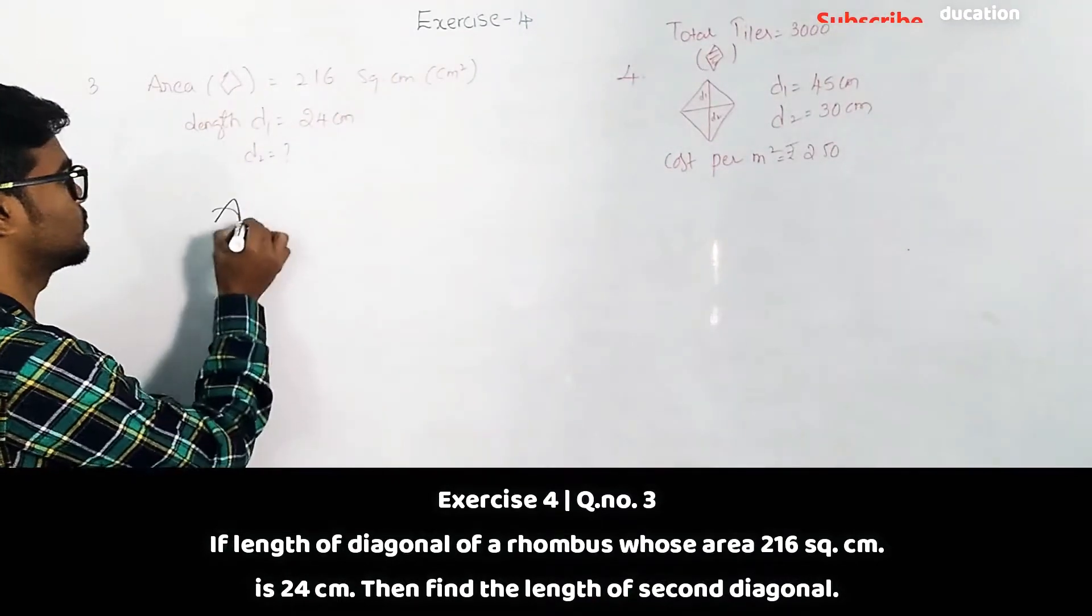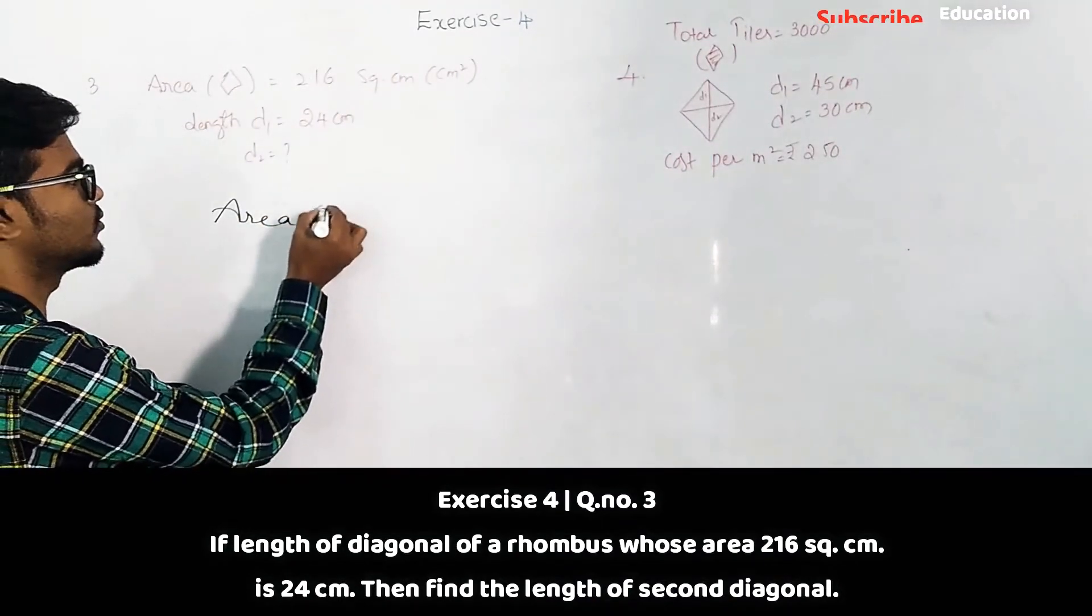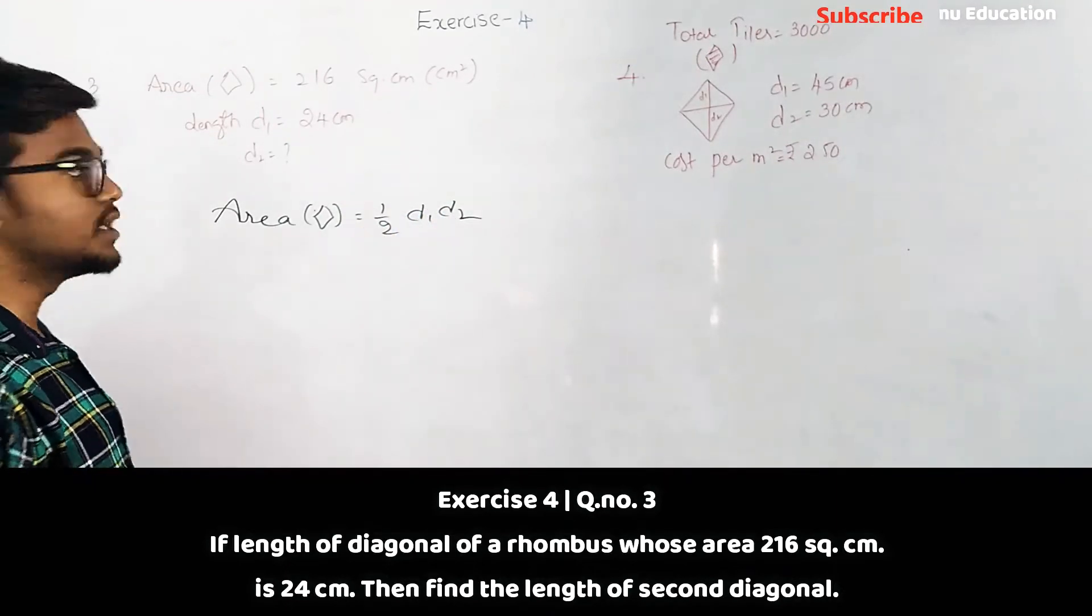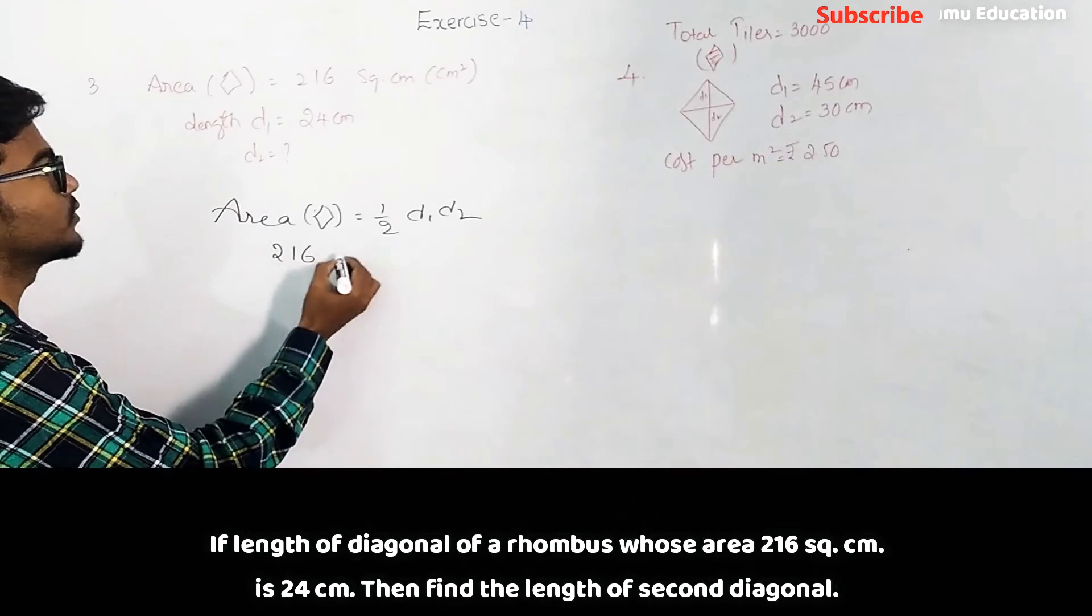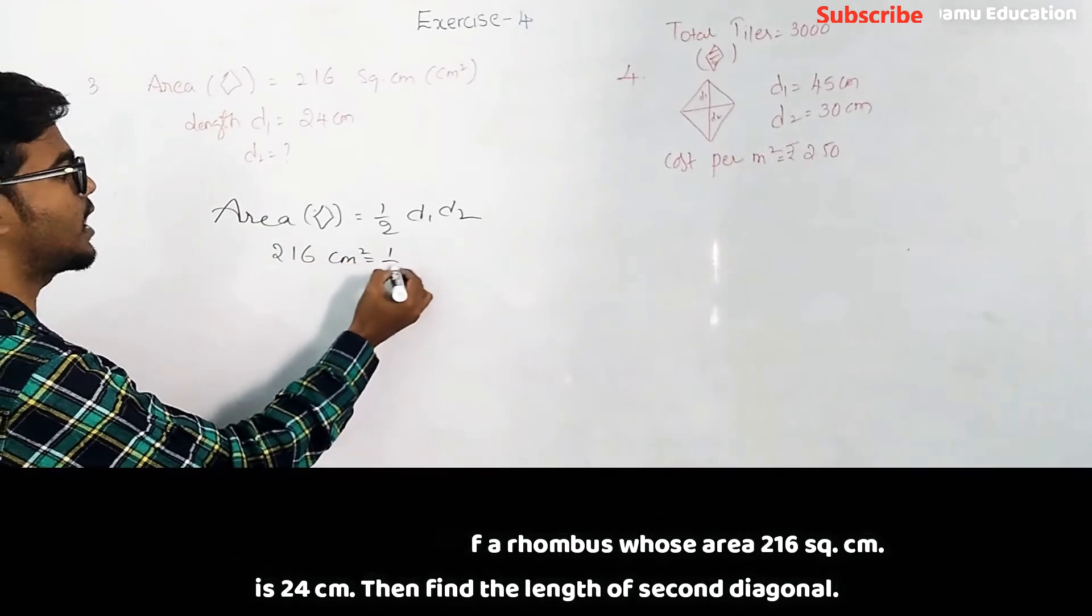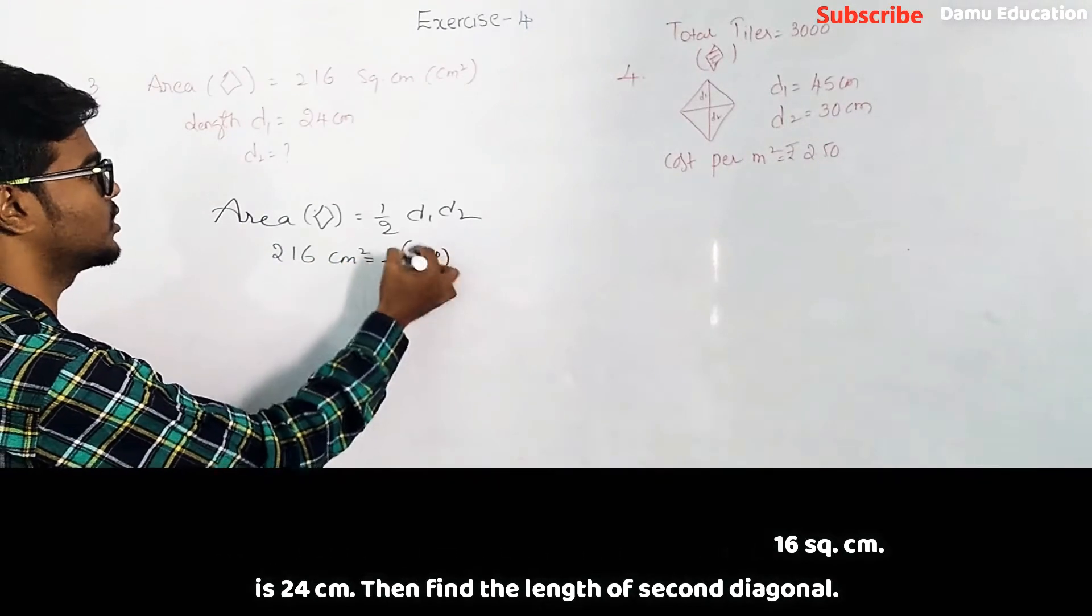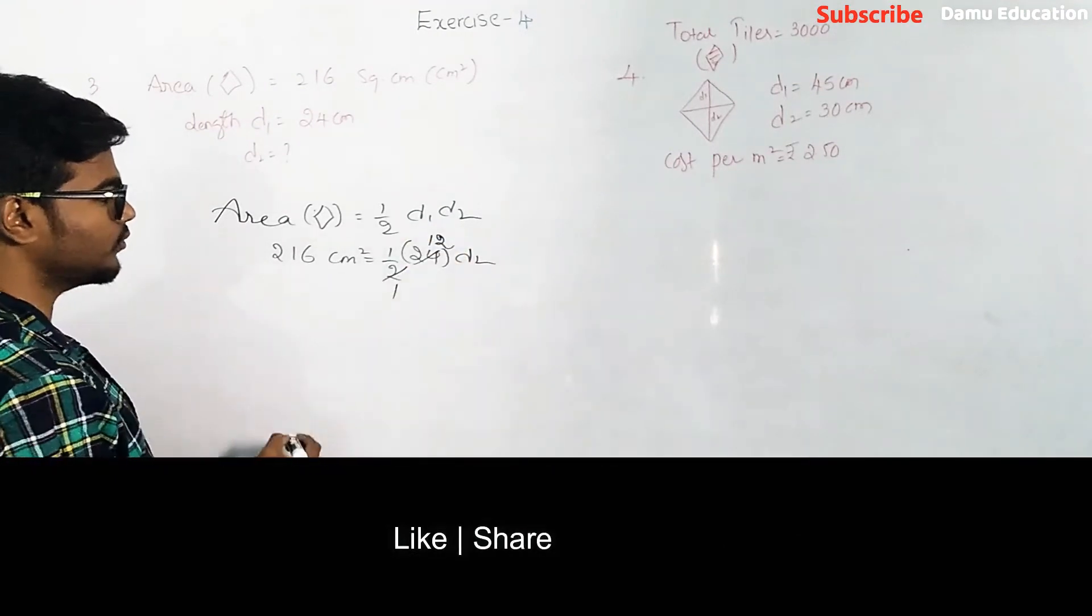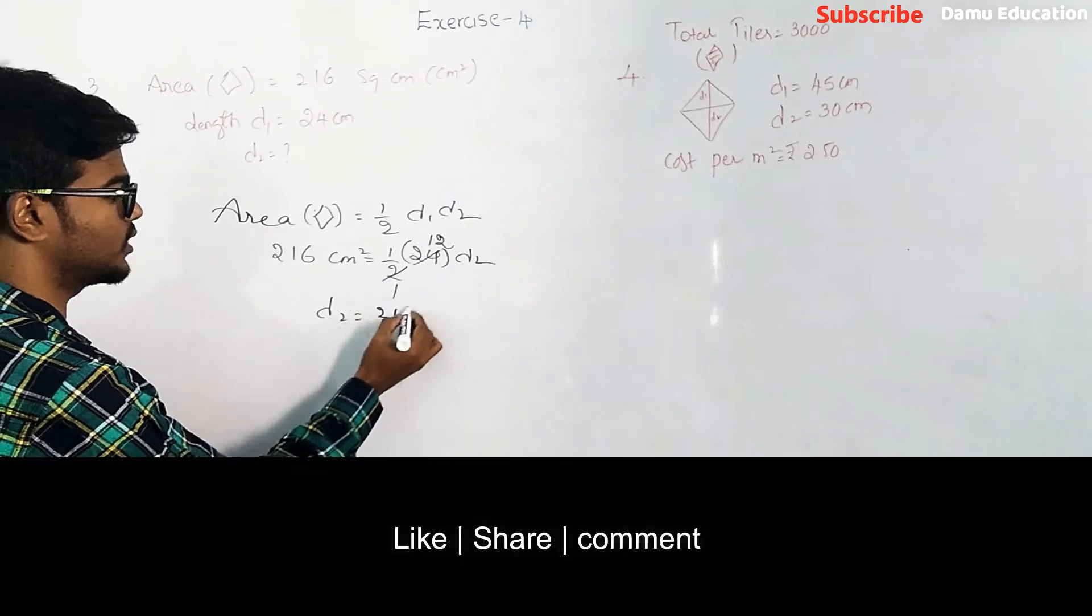Area of rhombus will be half into d1 times d2. So area of rhombus is 216 centimeter square, then half into d1 they are given 24, then d2. So 2 times 12, then d2 will be equal to 216 by 12.